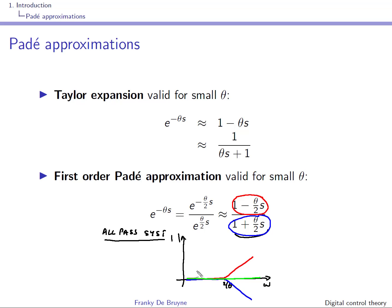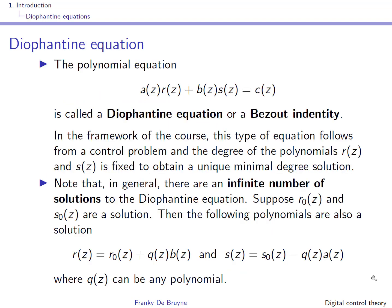You can see that all frequencies pass through the system without being amplified or attenuated — hence the name all-pass. Of course, there is a frequency shift: at very low frequencies there will be no phase shift, but at very high frequencies you will have a phase shift of minus 180 degrees.